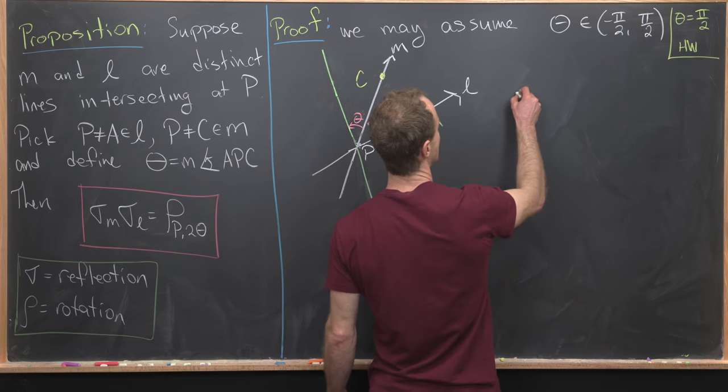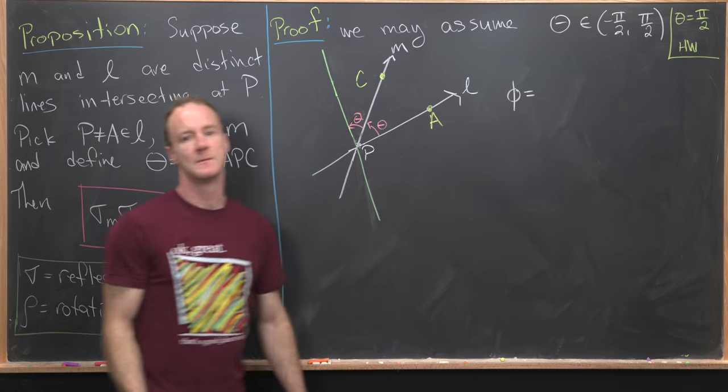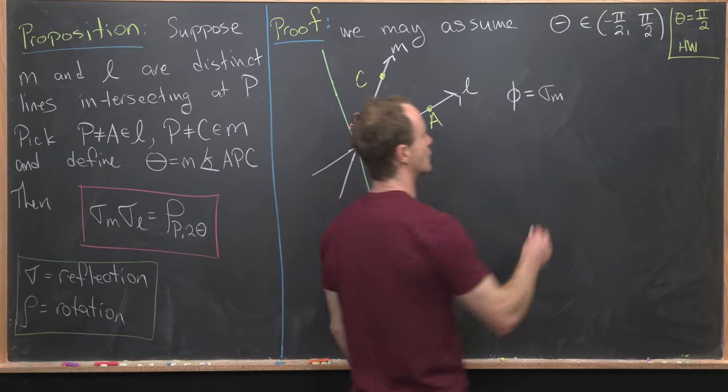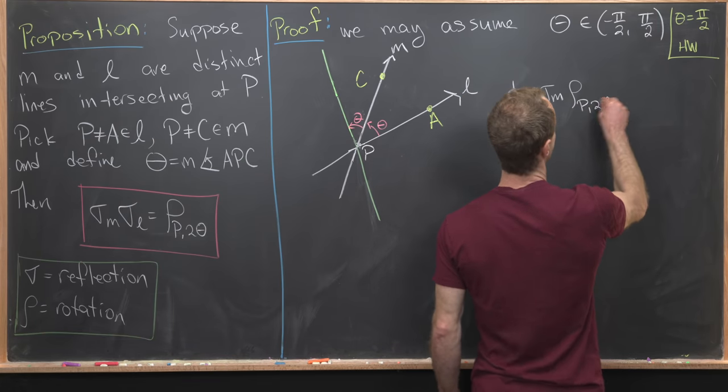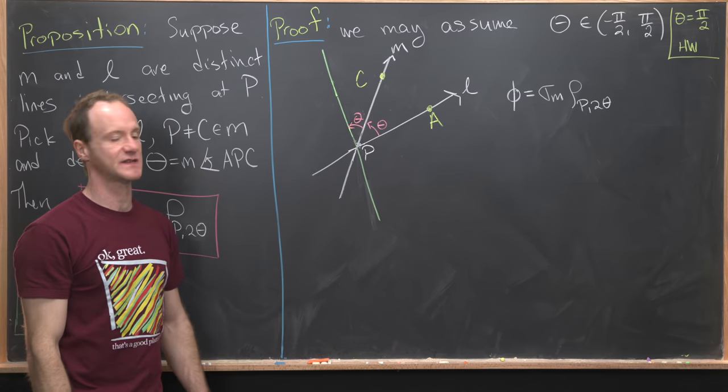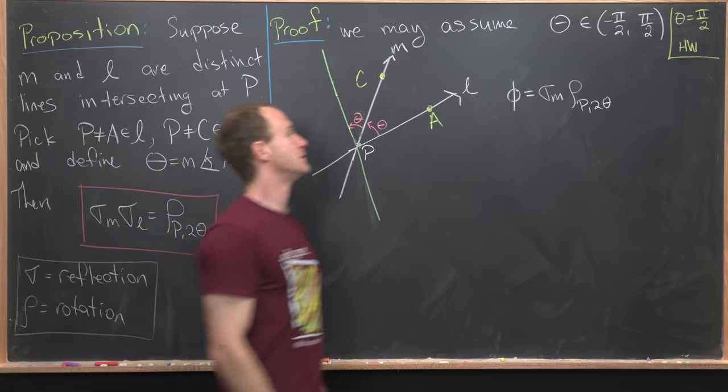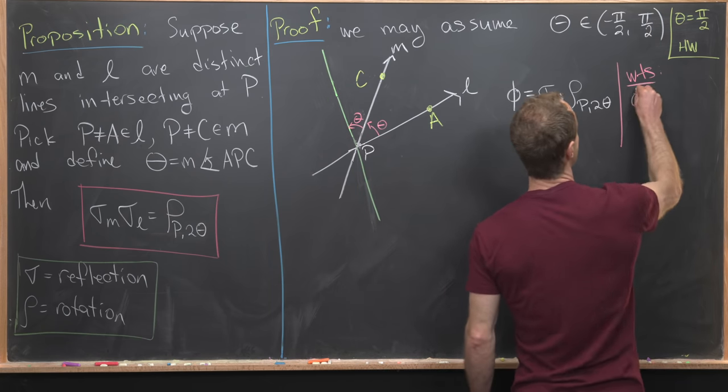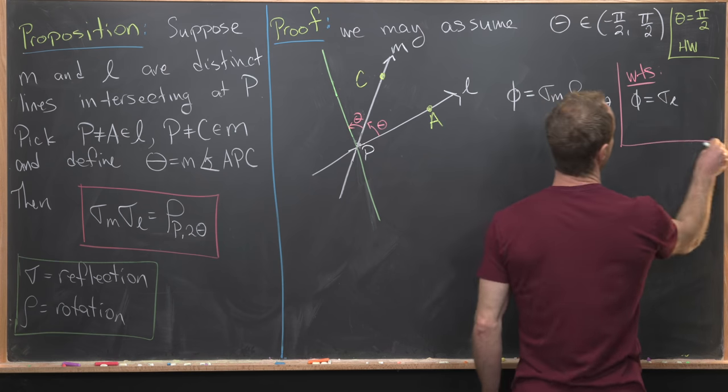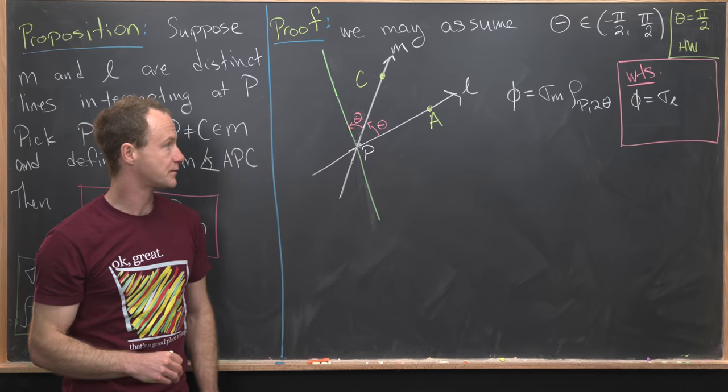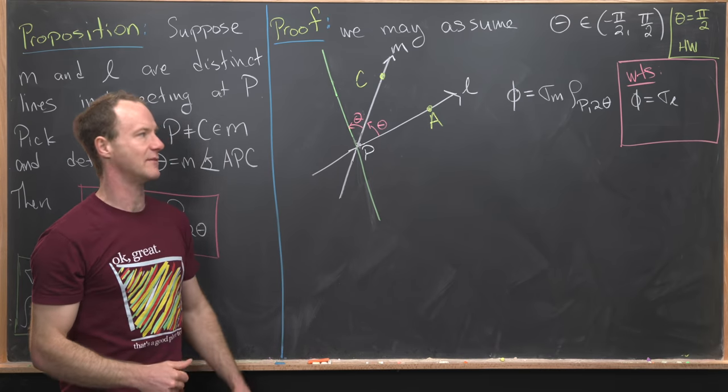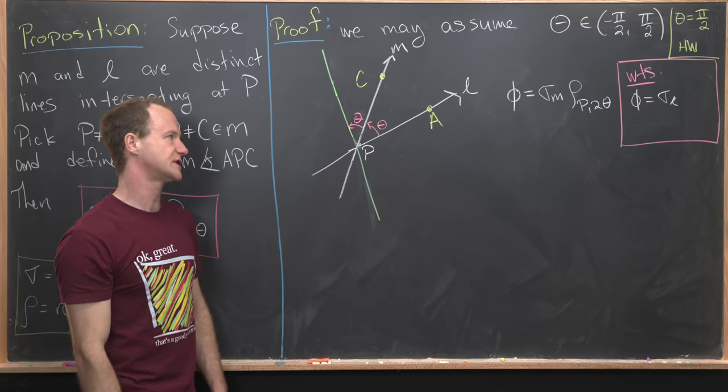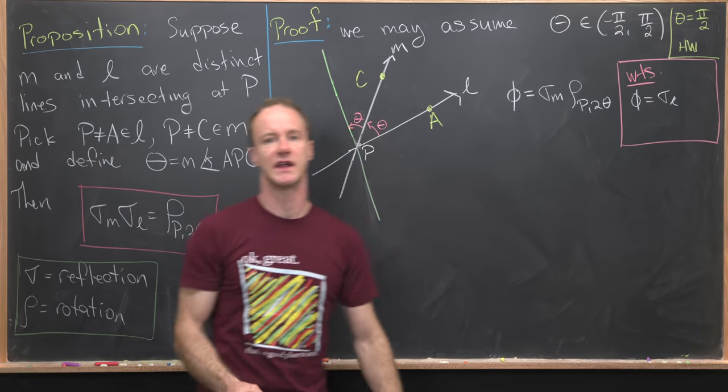We want to consider the following isometry. I'll call it phi. It will be the composition of a reflection about M and a rotation about P of angle two theta. We do the rotation first and then the reflection second. What we will want to end up showing is that phi is equal to sigma L. And notice if we get phi equals sigma L, then we can just left multiply by sigma M, that reflection about M. But reflections are their own inverses. And then that ends up with this equation right here, which is what we're going for.